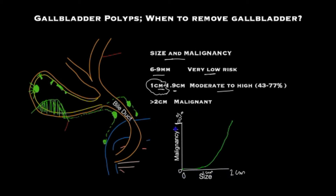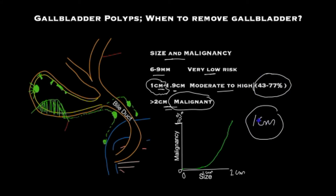This graph shows polyp size on one axis and risk of malignancy on the other, and you can see the risk rises very rapidly — so that if polyps reach a size of 2 centimeters they are almost always cancerous. Even with sizes between 1 to 1.9 centimeters, the risk rises to between 40 to 70 percent as size increases. Take-home message: for polyps 1 centimeter or bigger, the gallbladder needs to come out.